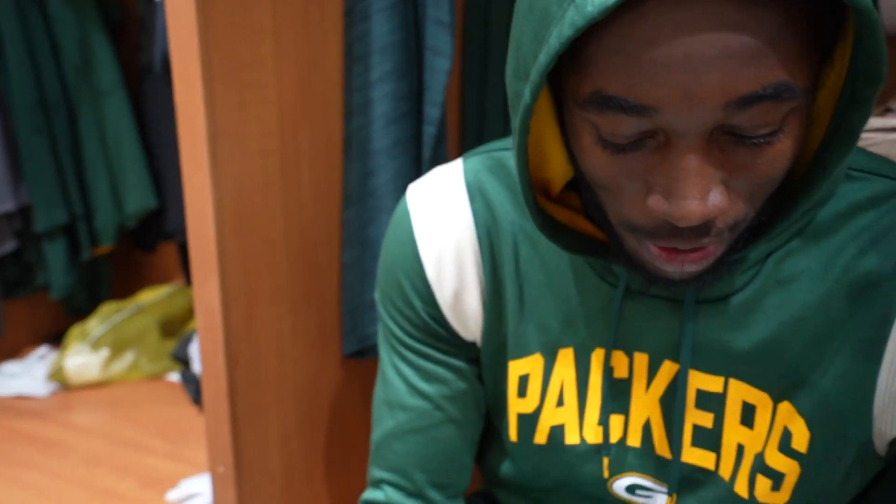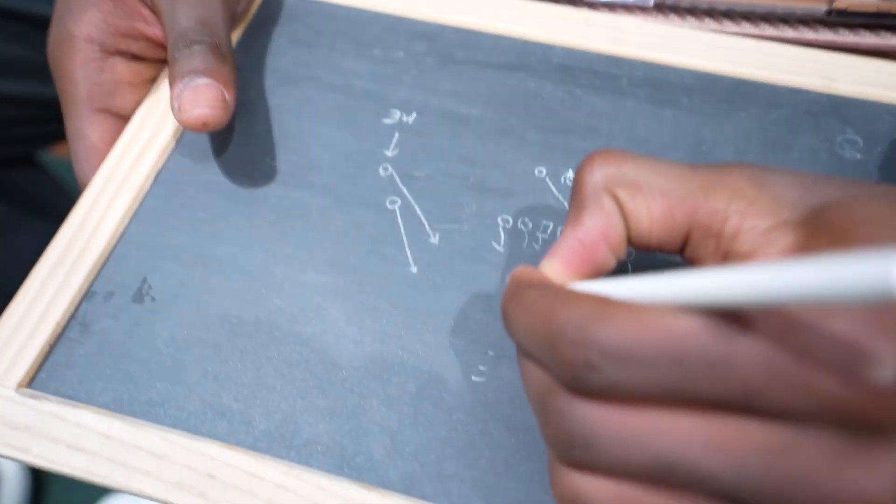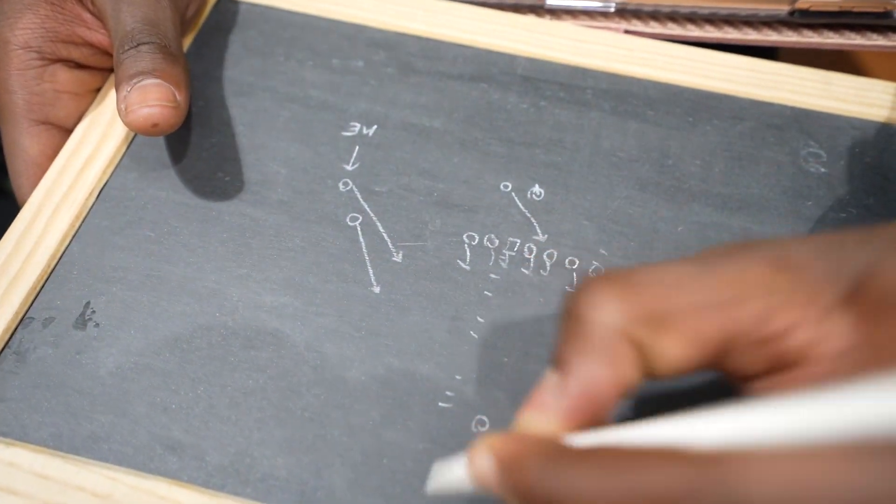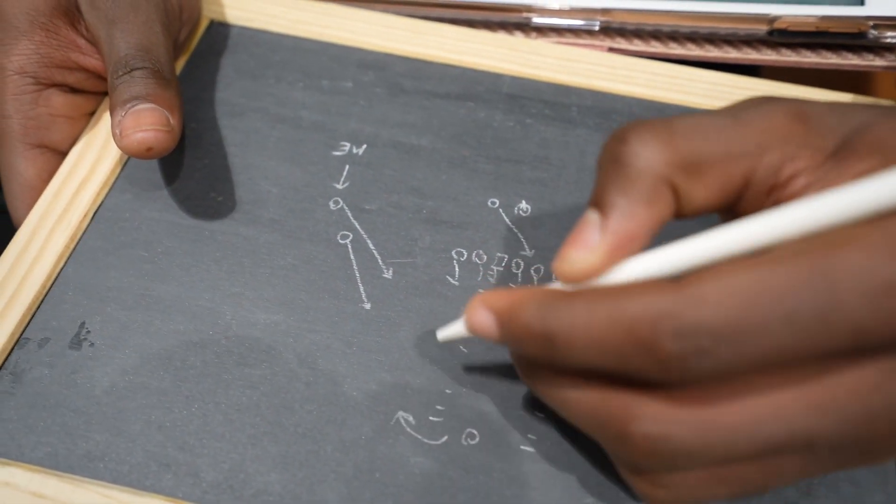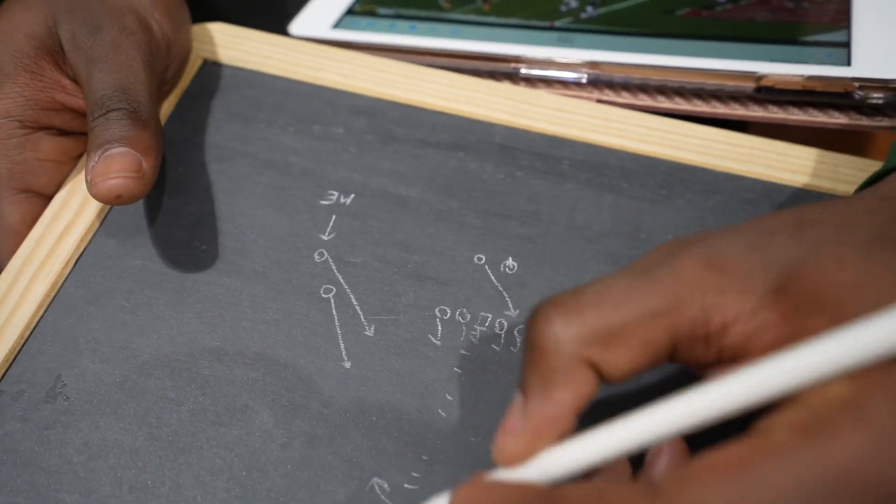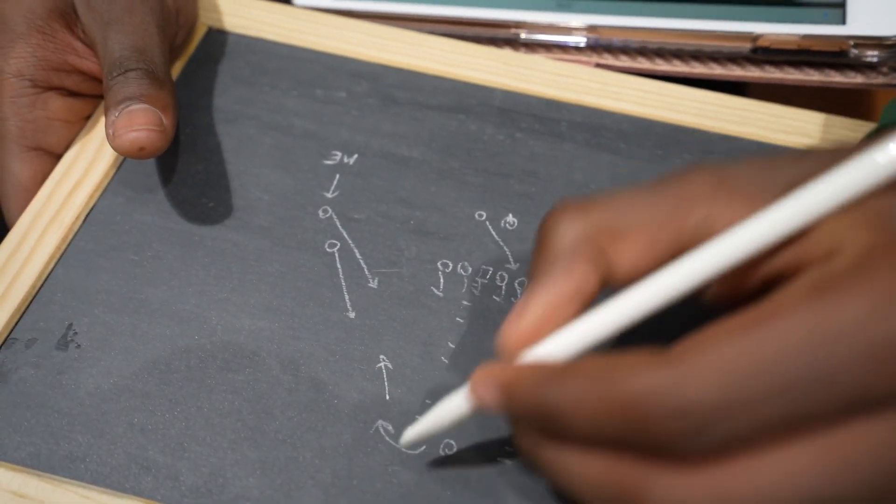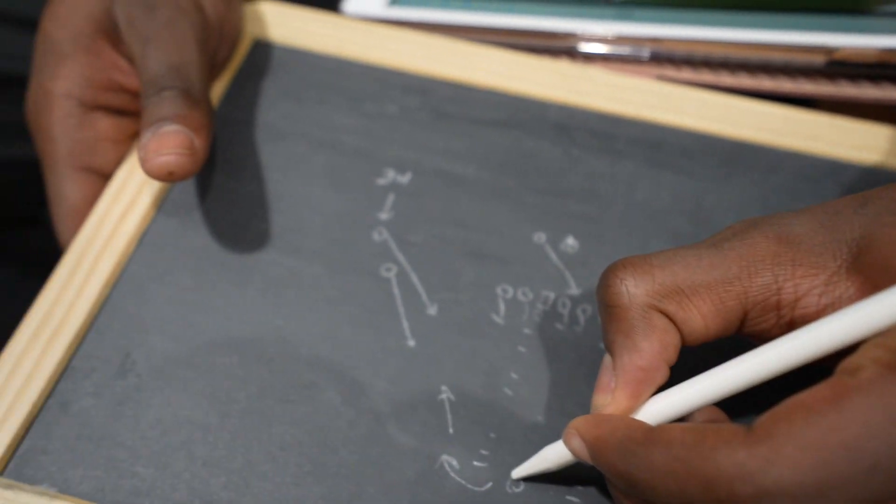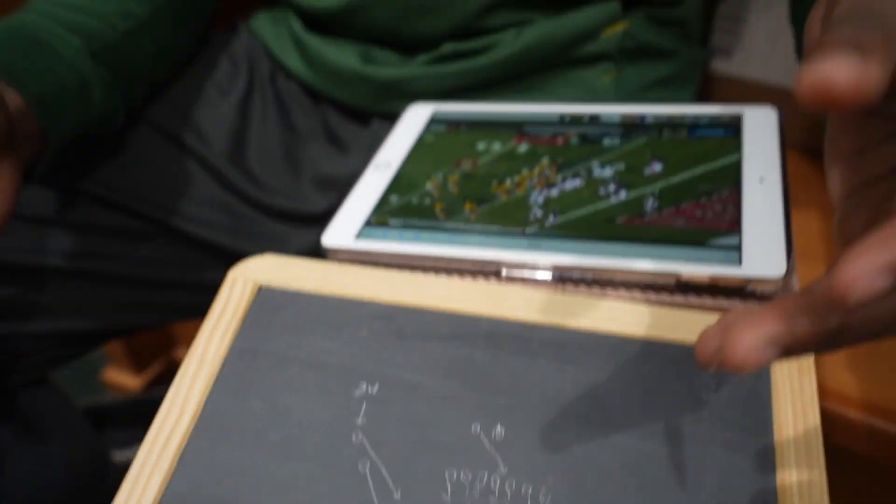So let's say if the hash is right here, the safety is right here. If the safety was anywhere outside of here, he probably wouldn't have thrown that ball because he would trigger a lot faster. Since he was here, even if he still triggers, the spacing and the time of the play, he wouldn't have got that in time.